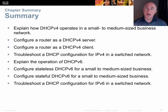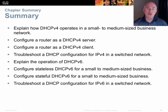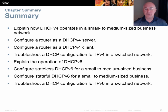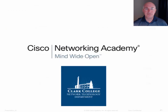In summary, you now know how to explain how IPv4 DHCP servers operate in small to medium-sized networks. You can configure a router as an IPv4 DHCP server and as an IPv4 DHCP client. You can troubleshoot DHCP configuration in an IPv4 network. You can explain IPv6 DHCP operation, configure both stateless and stateful IPv6 DHCP servers, and troubleshoot DHCP configuration for IPv6. Congratulations, and thank you.